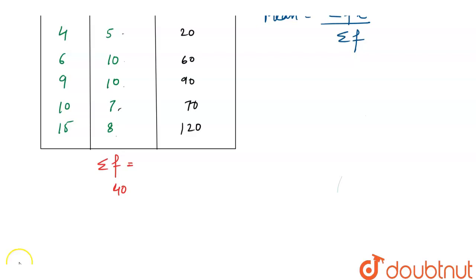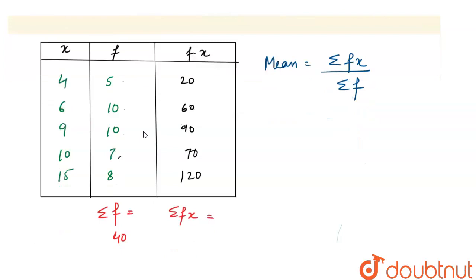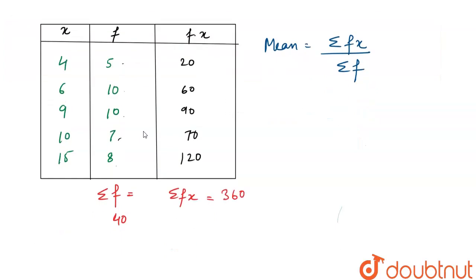Now we have sigma fx. Summation of all these terms will be 20 plus 60 equals 80, 80 plus 90 equals 170, 170 plus 70 equals 240, and 240 plus 120 equals 360. So we get sigma fx equals 360.